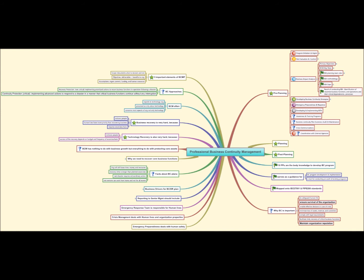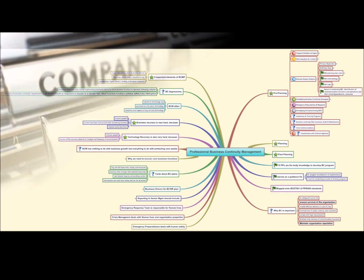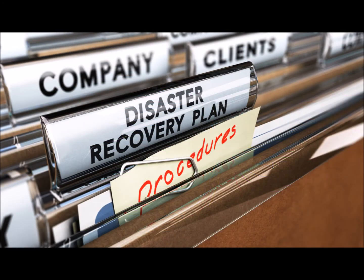And if not possible, then define compensating controls that would limit the effects of an adverse situation. All related information to the business continuity and disaster recovery of the organization, including the defined processes, procedures, and controls, should be secured and protected.